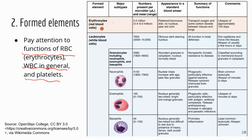Now let's look at erythrocytes or red blood cells. The main function, you already know probably, is to transport oxygen and carbon dioxide between the tissues and lungs. That's the main job for red blood cells, and that's an important job because all the cells need oxygen. They also need to get rid of carbon dioxide, so they all rely on red blood cells to do the job.